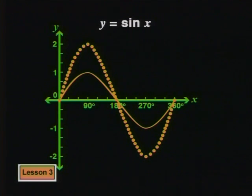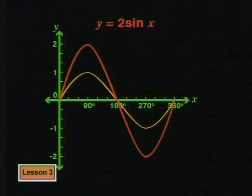If we continue to take each point on the parent graph and multiply it by 2, we will create the graph of y equals 2 sine x. It's as if the parent graph has been stretched vertically up and down to form the new graph. We can say that it has a vertical stretch factor of 2.